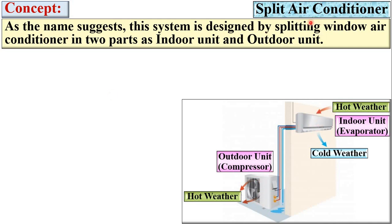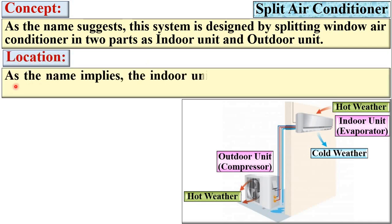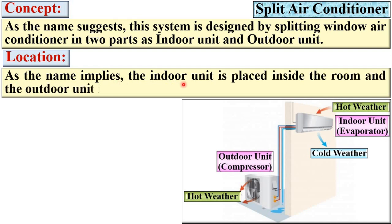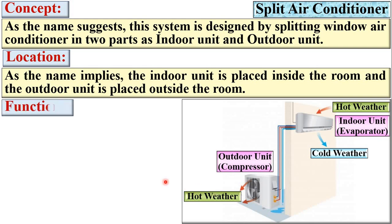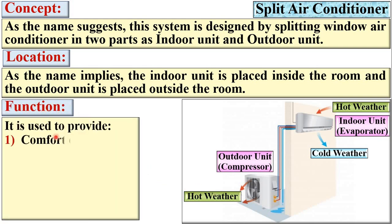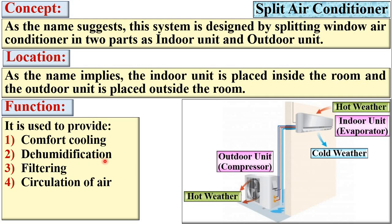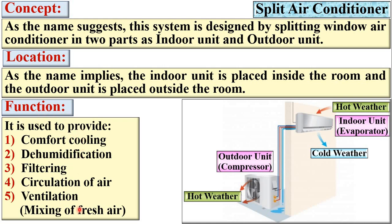Regarding location: the indoor unit is placed inside the room and the outdoor unit is placed outside the room. The function of the split air conditioner is to provide comfort cooling, dehumidification, filtering, circulation of air, and ventilation — meaning mixing of fresh air. These are the different objectives of the split air conditioner.